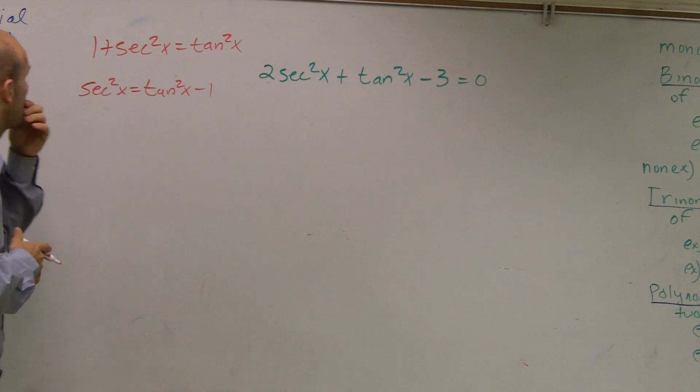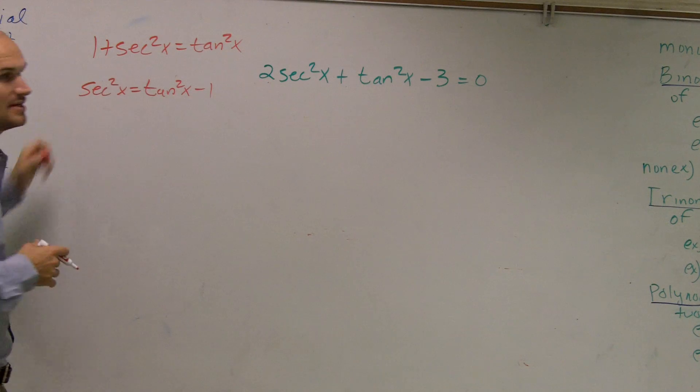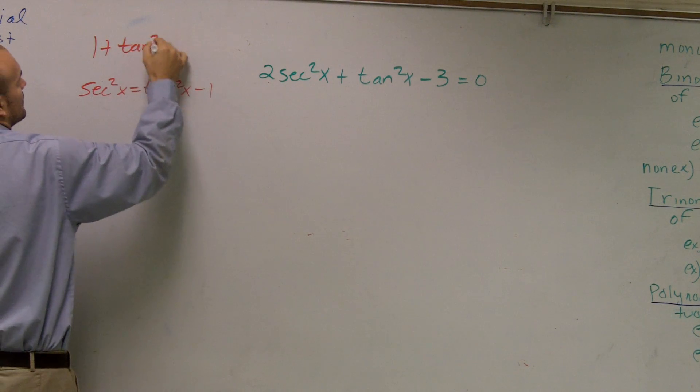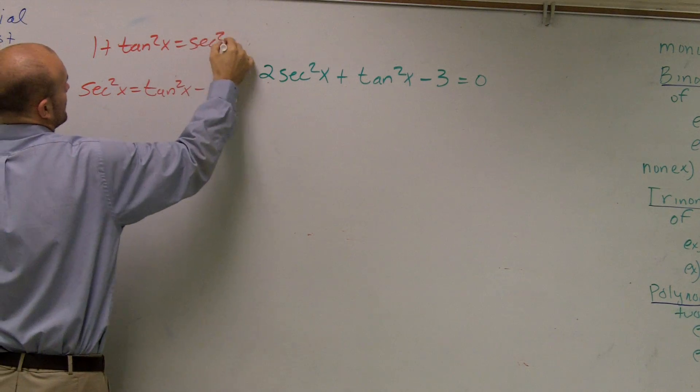It's 1 plus tangent squared equals secant squared. 1 plus tangent squared equals secant squared? Yeah. Oh yeah, that's right.